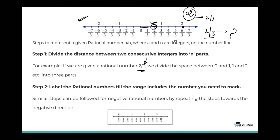The next step is to label the rational numbers until the range includes the number you need to mark. Similar steps can be followed for negative rational numbers by repeating the steps towards the negative direction. So for 2/3, starting from 0: the first division is 1/3, the second is 2/3 — and that is the number we want to represent. It's simple.